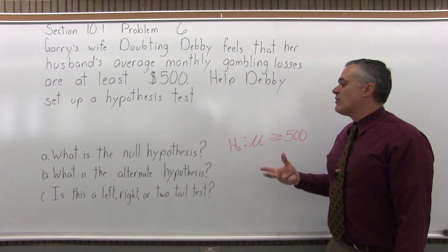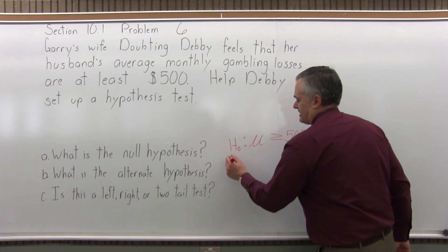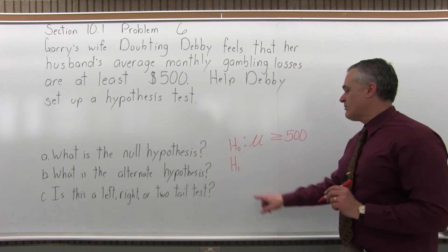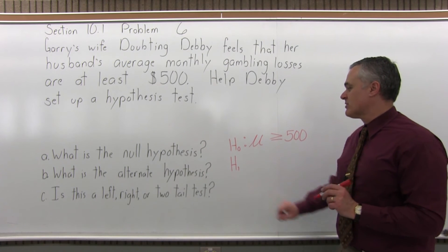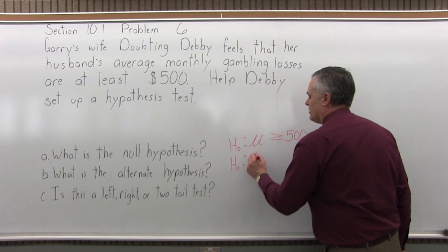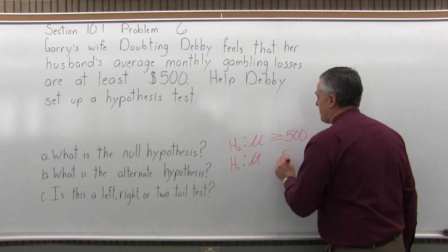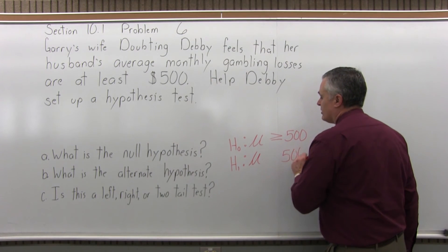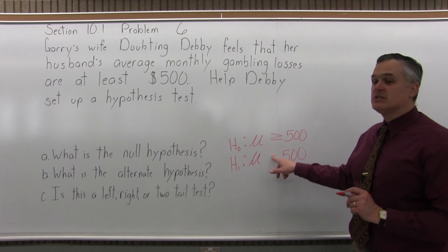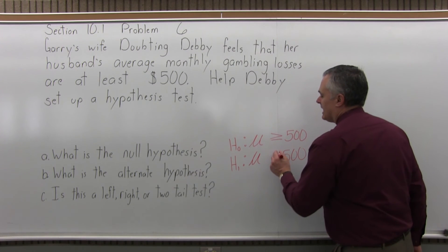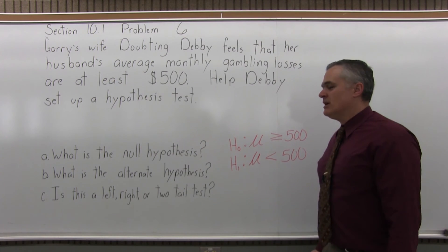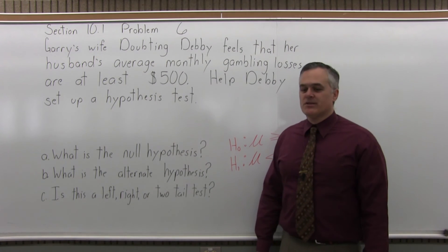So now what's the alternate hypothesis? The symbol is capital H with a subscript of 1, followed by a colon, then mu for population average, with the same number — the number in the null and the alternate should match. The symbol here would be less than. It's essentially the opposite of what the null hypothesis is.